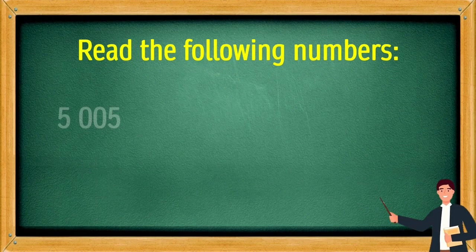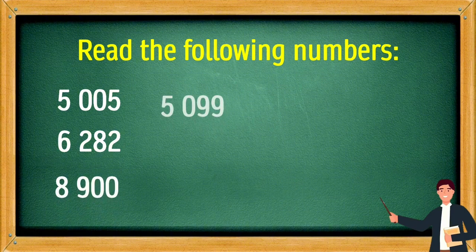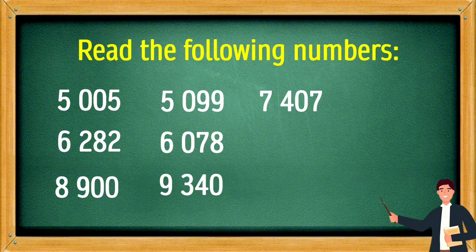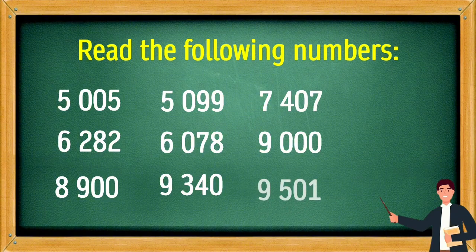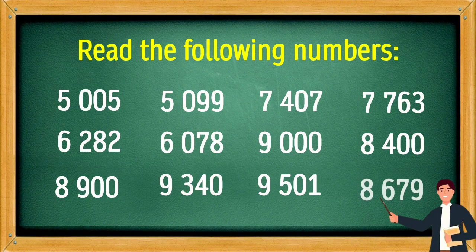Read the following numbers: 5,005 — 6,282 — 8,900 — 5,099 — 6,078 — 9,340 — 7,407 — 9,000 — 9,501 — 7,763 — 8,400 — 8,679.